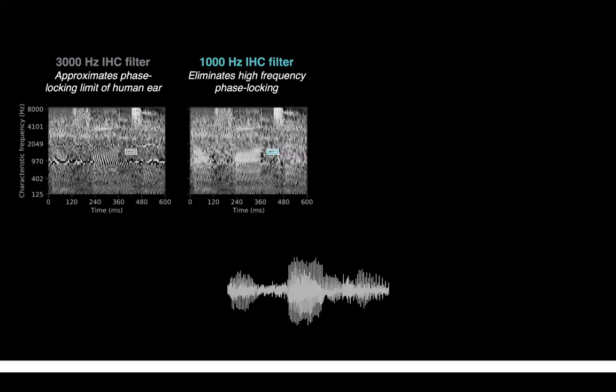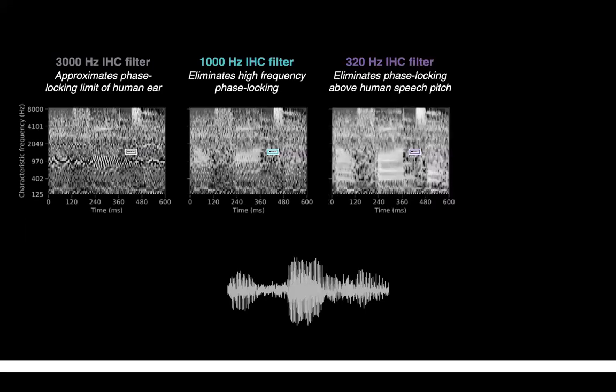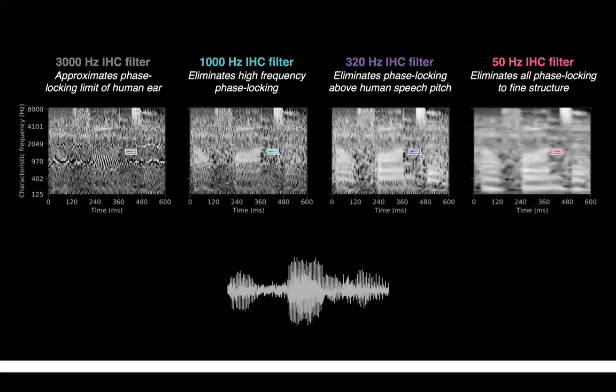In this work, we asked what might happen if the ear had worse temporal coding. We lowered the phase locking limit from 3000 to 1000 Hz, then to 320 Hz and to 50 Hz, eliminating virtually all phase locking to temporal fine structure.